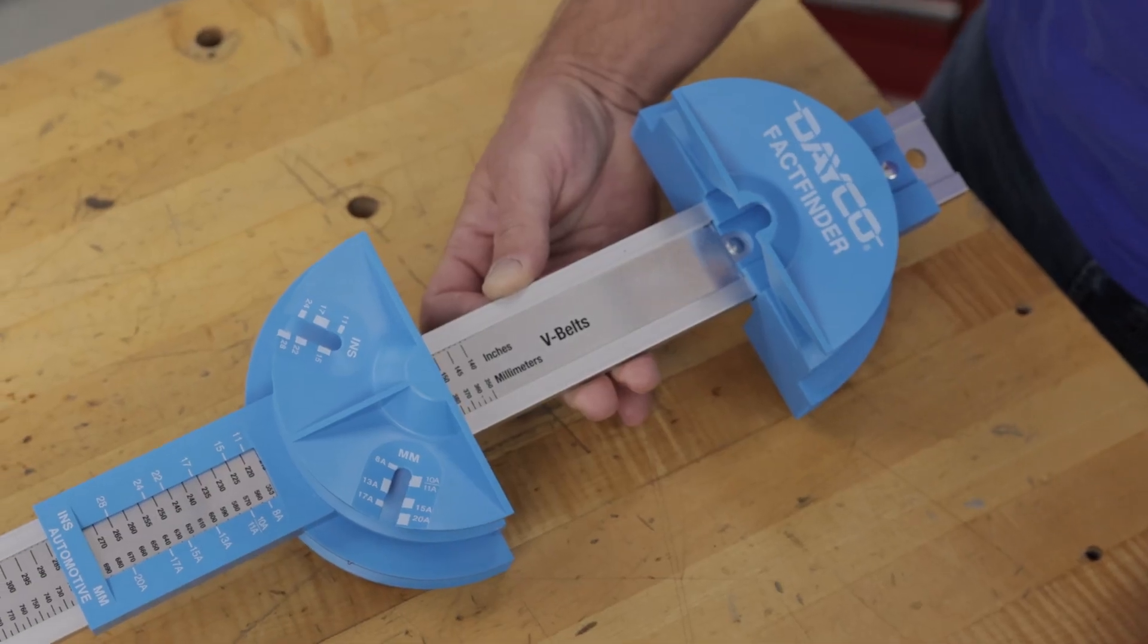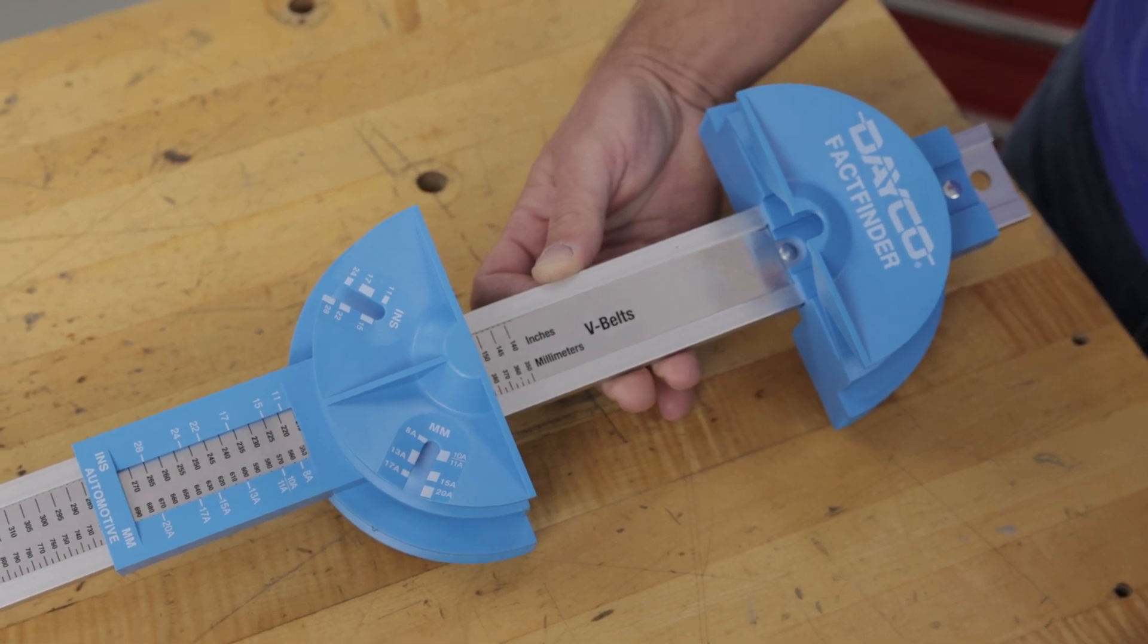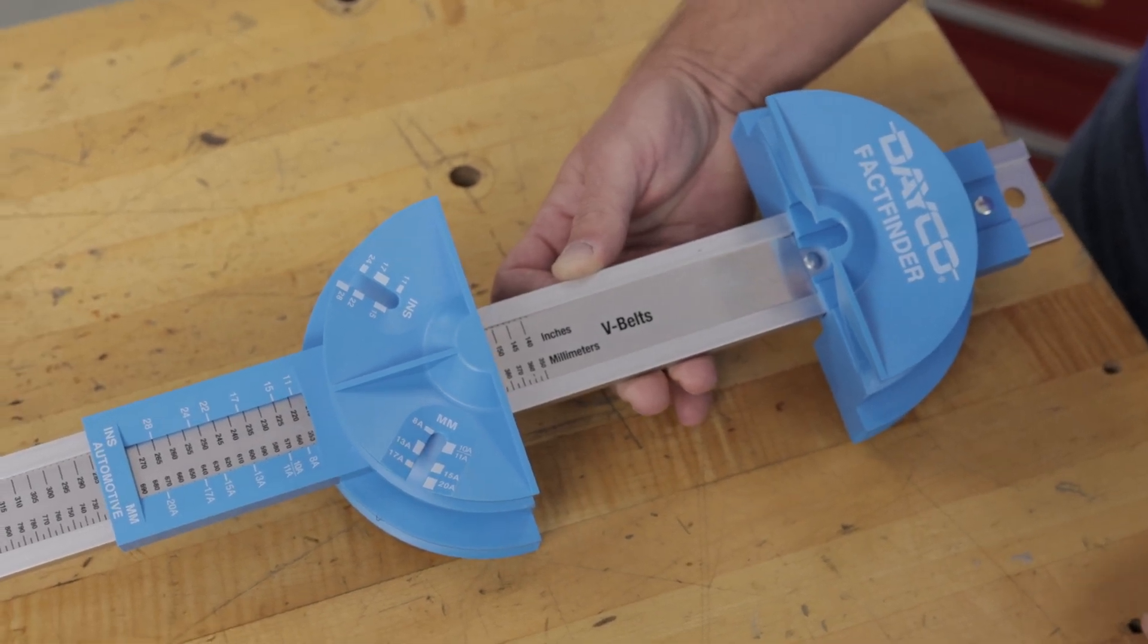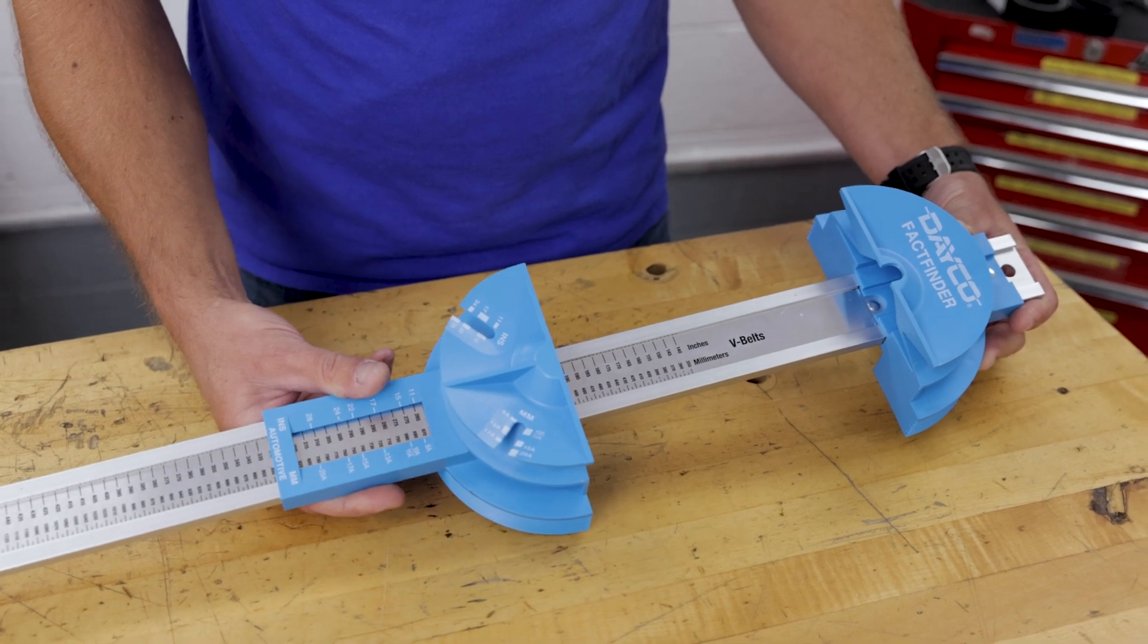This gauge provides an accurate measurement for belts and comes in handy when you're unable to identify the part number, which can sometimes happen if the belt is old or the numbers have worn off.